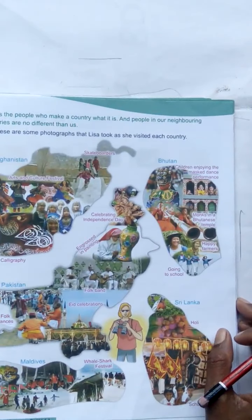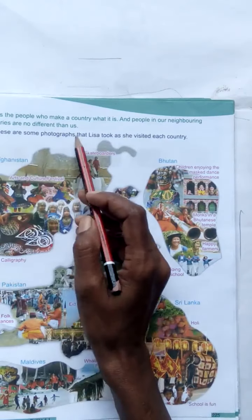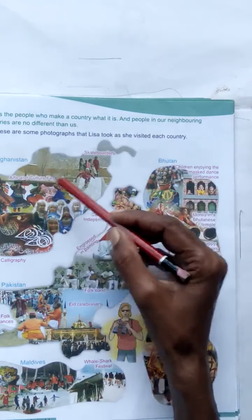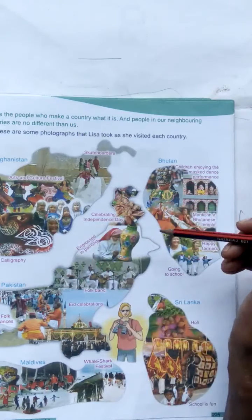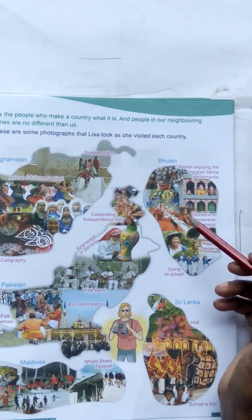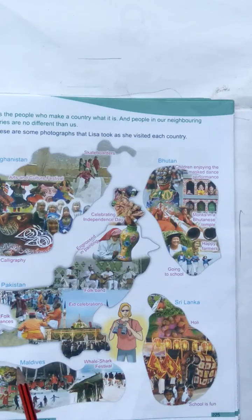It is the people who make a country what it is, and people in our neighboring countries are no different than us. These are all our neighboring countries. They are not different from us — some of the dresses are also the same, festivals, and the food we eat is similar. Each country has its own customs and traditions, but we are essentially the same.